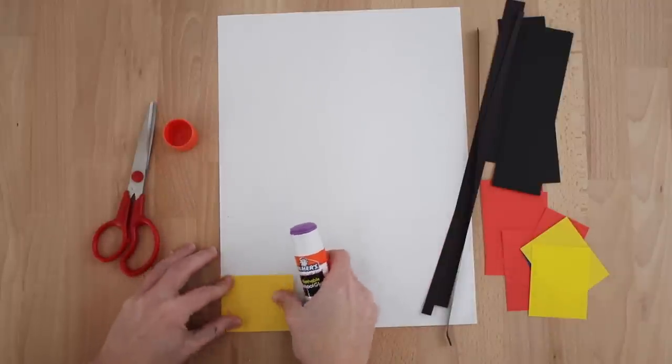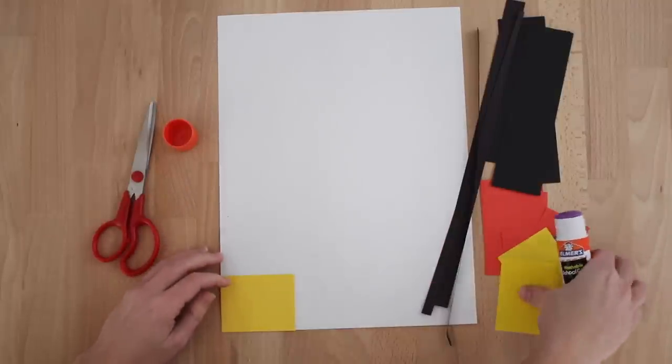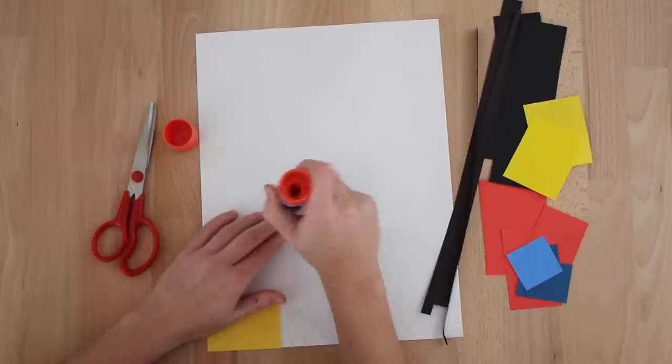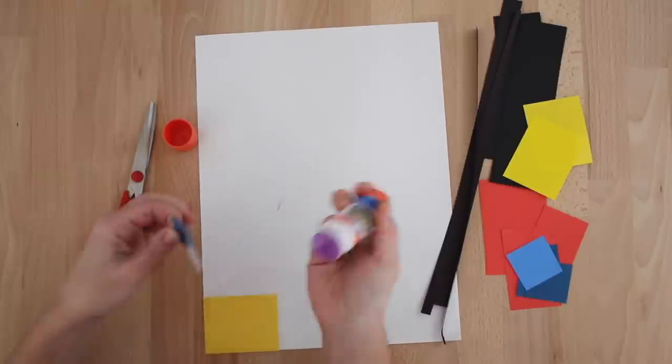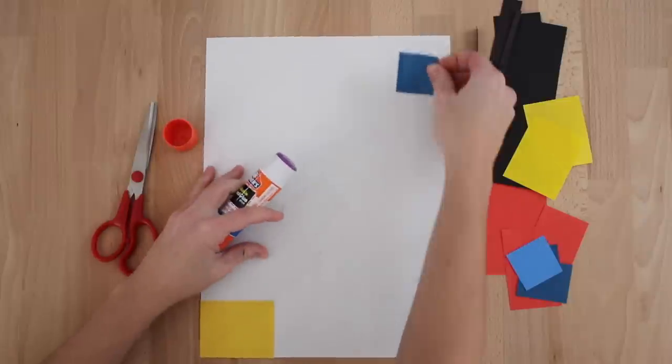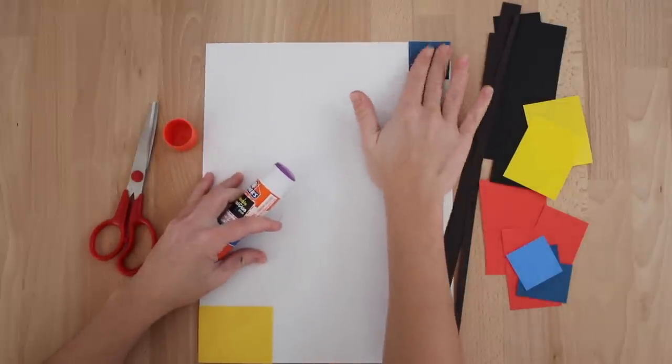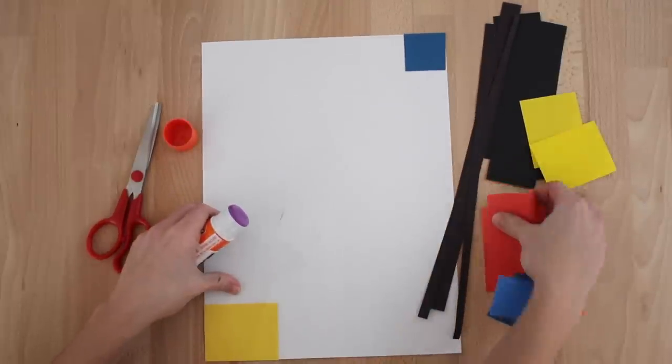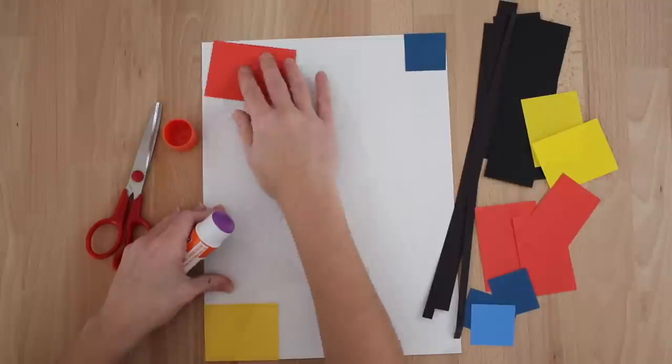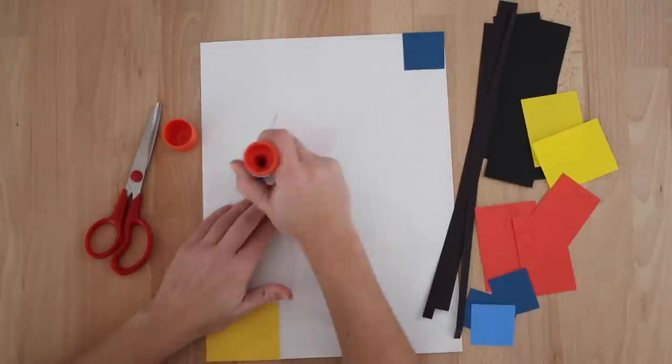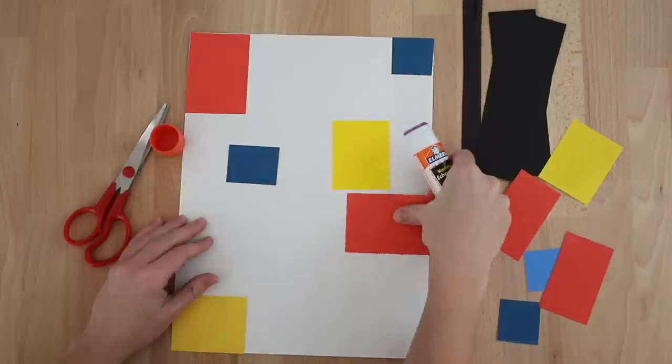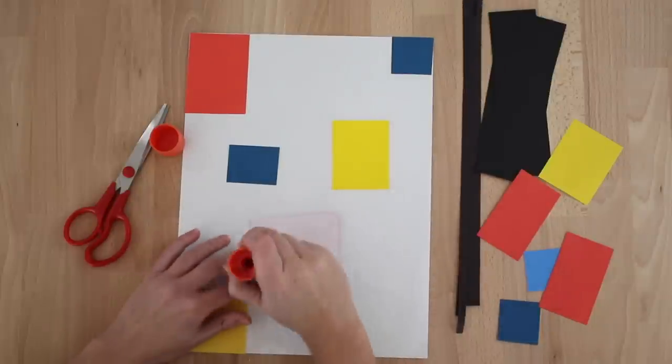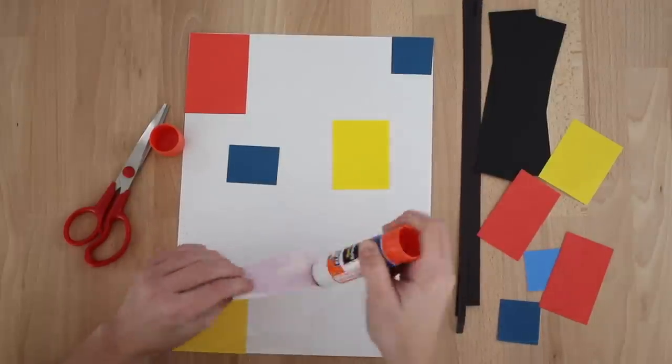First, you will need to use your glue stick to glue down the rectangles and squares of the three primary colors wherever you would like. However, it would be easiest to begin gluing them in the corners first. Then you can glue some down in the middle of your paper.